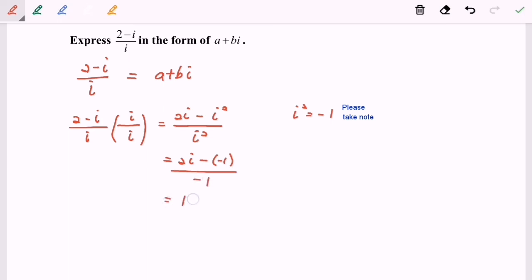Rearrange: 1 plus 2i over negative 1. And then simplify, we have negative 1, negative 2i, which is equal to a + bi.